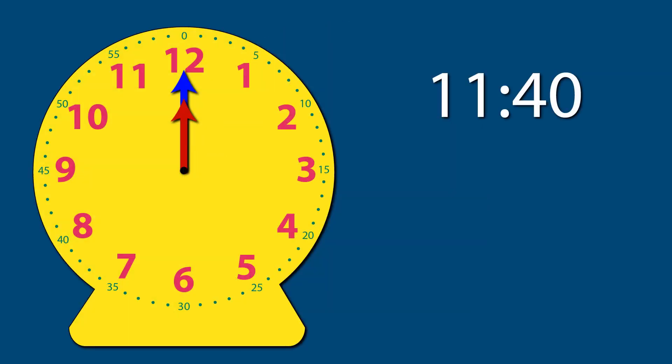To illustrate this, let's go over some examples of how to add and subtract time. Let's add 3 hours and 38 minutes to 11:40. First, let's start by showing 11:40.